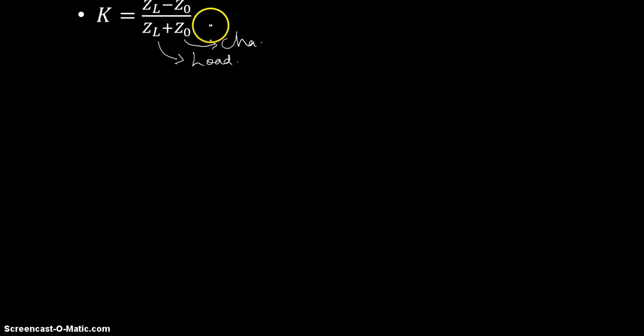Now from this particular term I can rewrite the ZL value as ZL equals Z0 times 1 plus K divided by 1 minus K. This basically tells you that the term ZL is a function of the real part of K and the imaginary part of K.